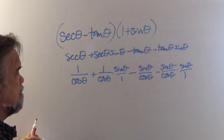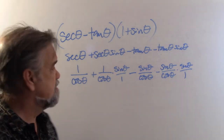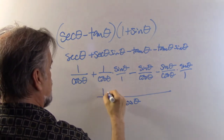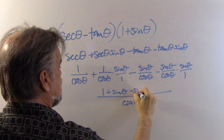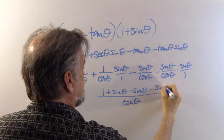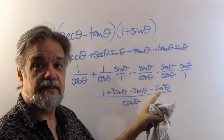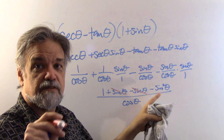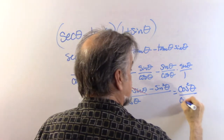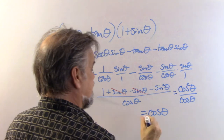Cosine is the common denominator throughout number seven. Combining over cosine of theta: one plus sine of theta minus sine of theta minus sine squared of theta. The plus sine and minus sine cancel, leaving one minus sine squared of theta over cosine of theta. Since one minus sine squared equals cosine squared, we get cosine squared over cosine, which simplifies to cosine of theta.